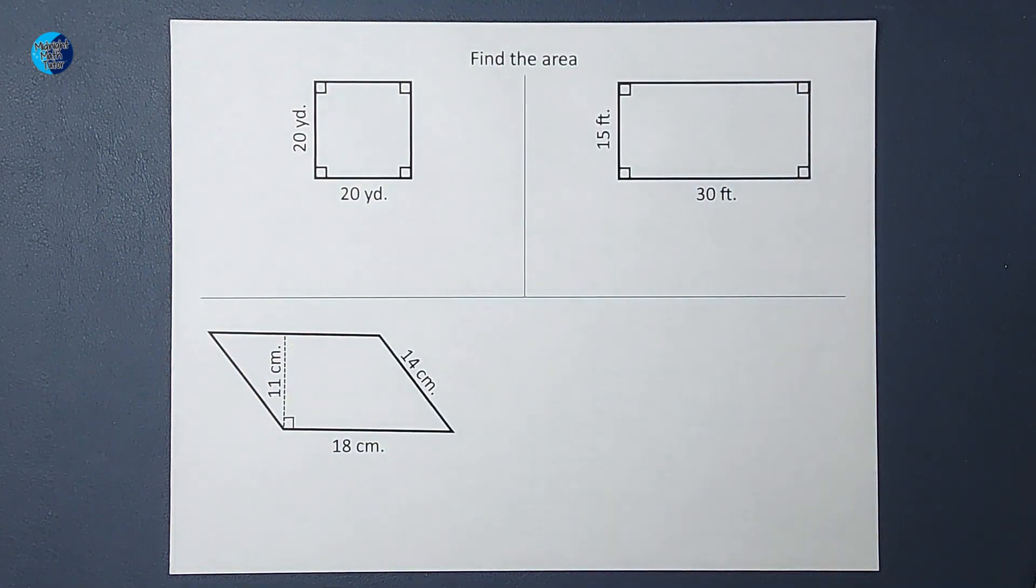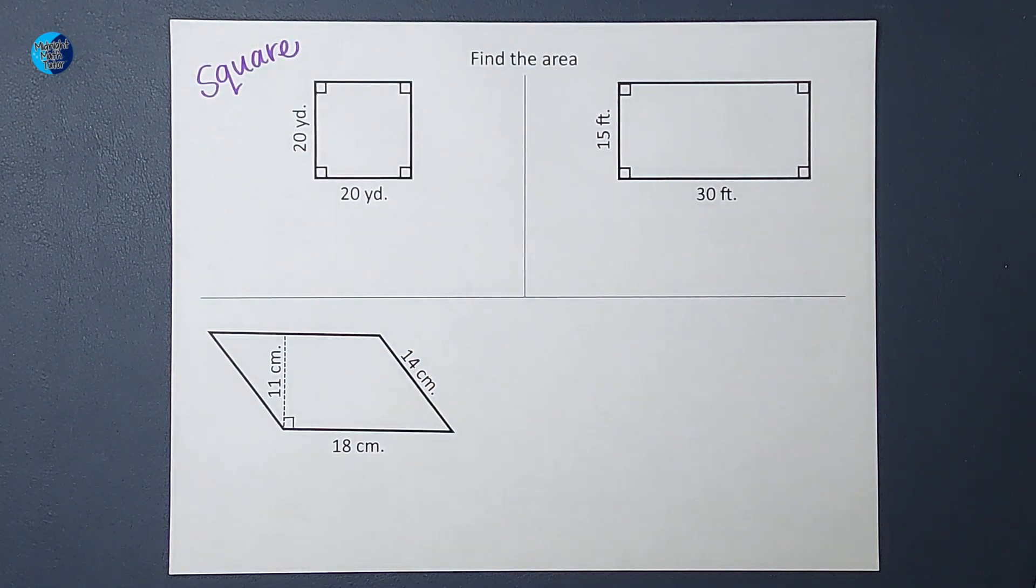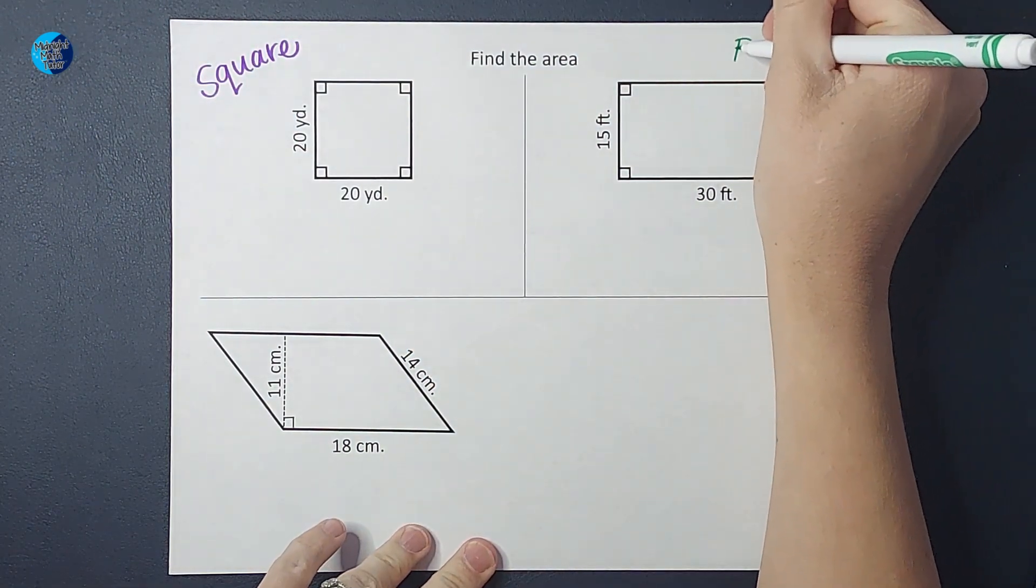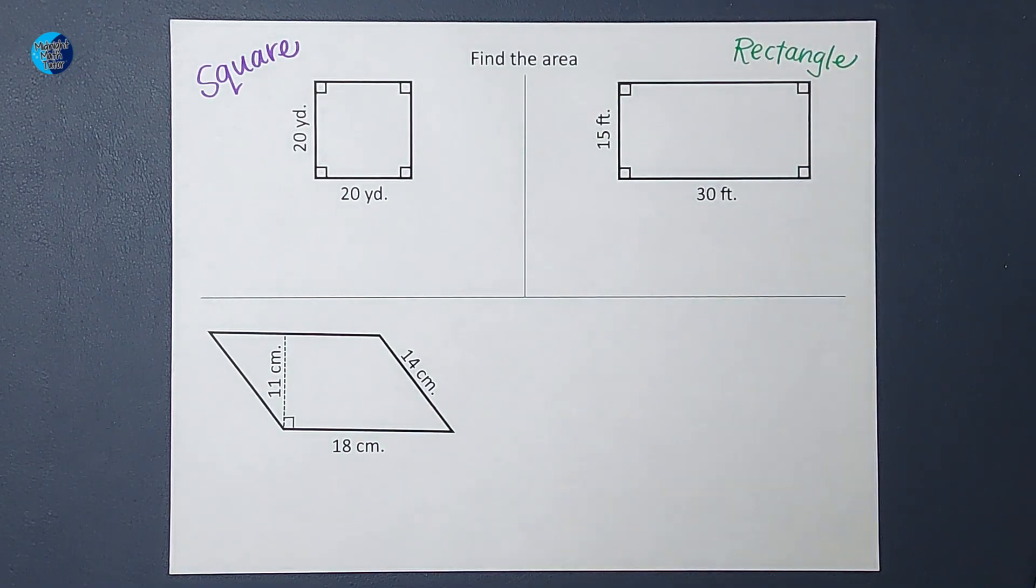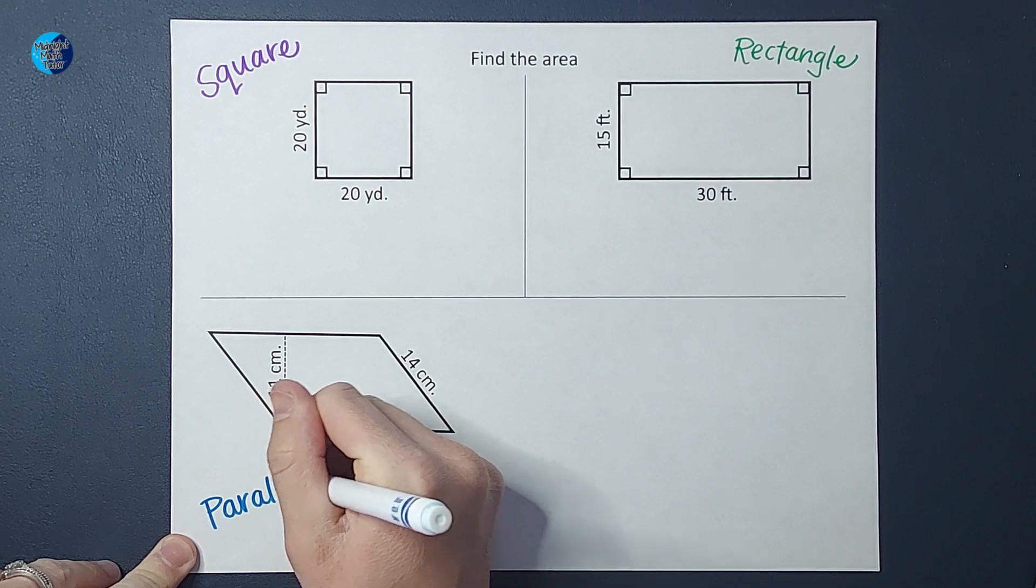We're going to find the area of each of these quadrilaterals. First off we have a square, then we have a rectangle, and last but not least we have a parallelogram.